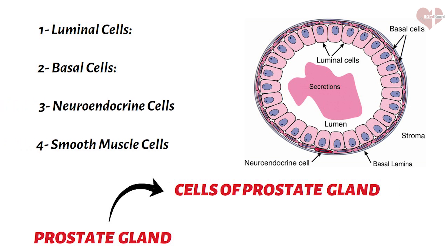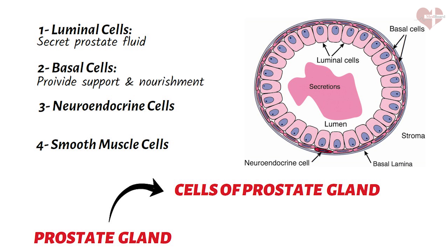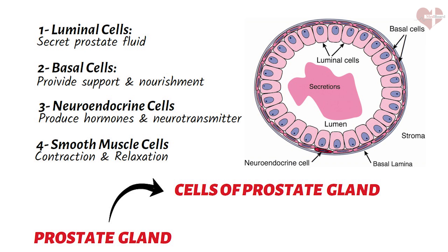Glandular epithelial cells produce and secrete prostate fluid, which is a major component of semen. Basal cells form a layer at the base of the glandular epithelial cells and provide support and nourishment to the epithelial cells. Neuroendocrine cells produce hormones and neurotransmitters that help regulate the function of the prostate gland. Smooth muscle cells form the muscular layer of the prostate gland and help with the contraction and relaxation of the gland during ejaculation.